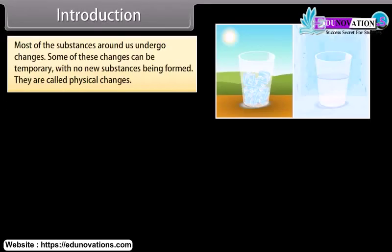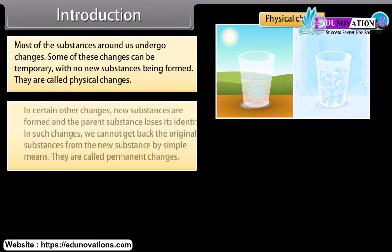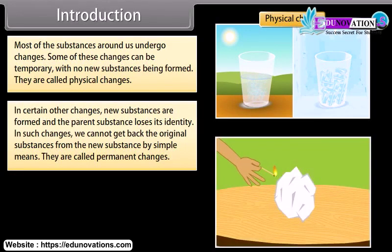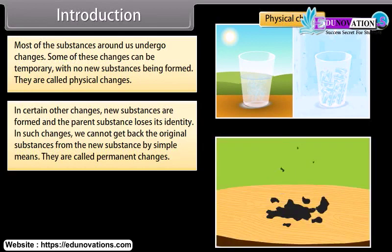Most of the substances around us undergo changes. Some of these changes can be temporary with no new substances being formed - they are called physical changes. In certain other changes, new substances are formed and the parent substance loses its identity. In such changes we cannot get back the original substance from the new substance by simple means.